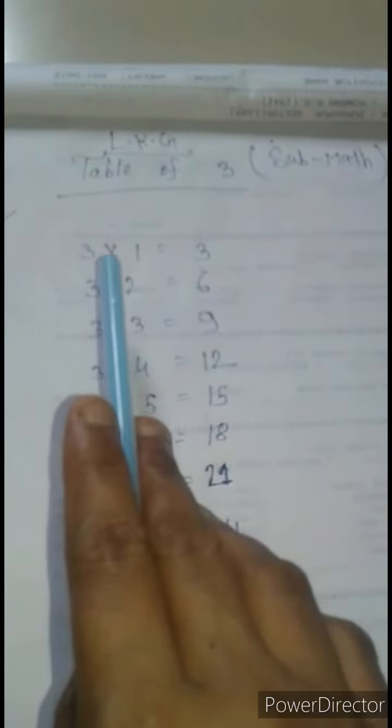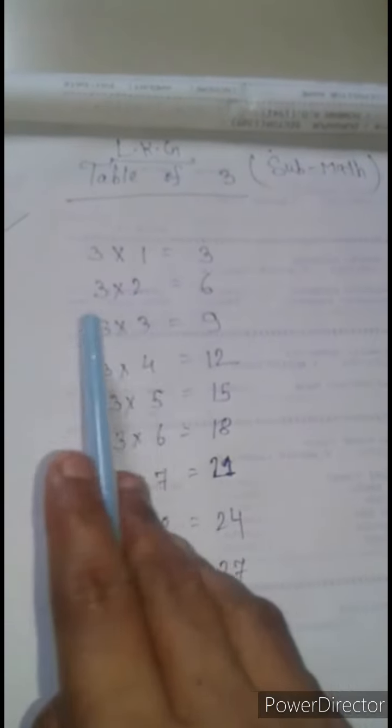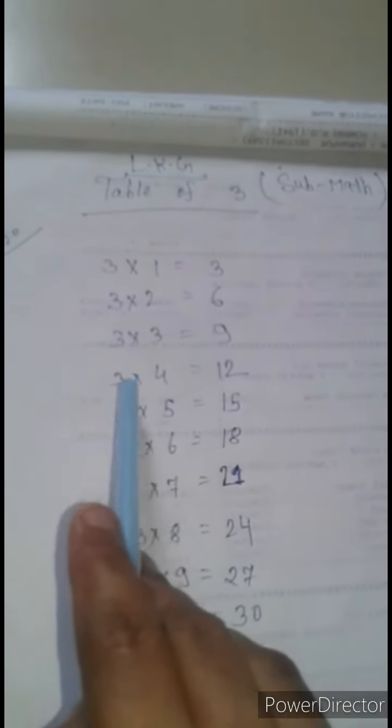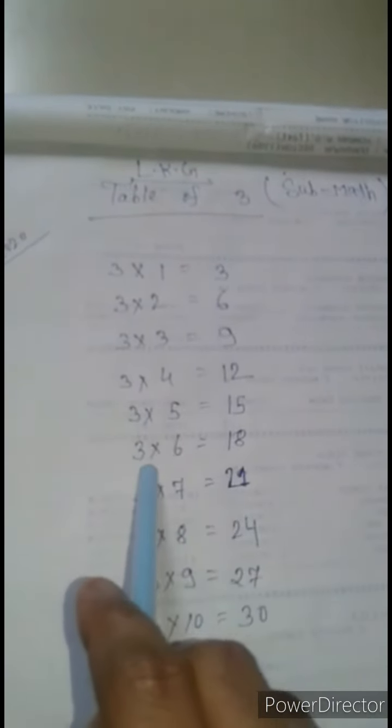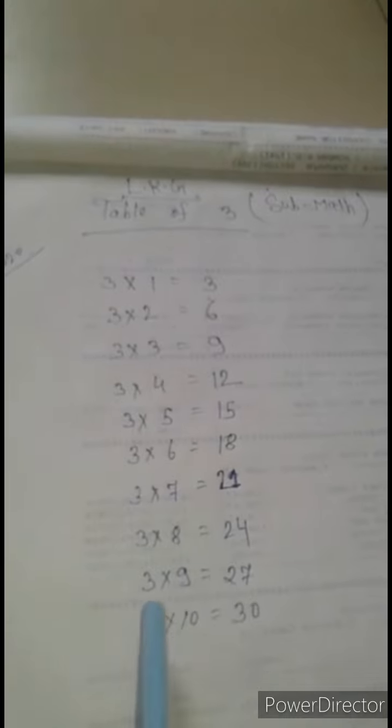Again repeat. 3 times 1 is 3, 3 times 2 is 6, 3 times 3 is 9, 3 times 4 is 12, 3 times 5 is 15, 3 times 6 is 18, 3 times 7 is 21, 3 times 8 is 24, 3 times 9 is 27, 3 times 10